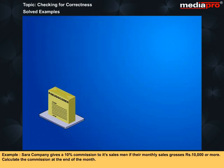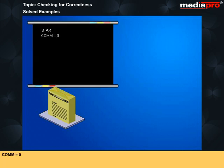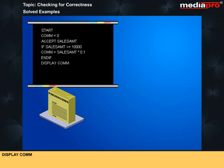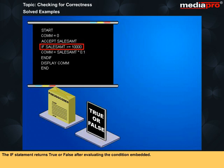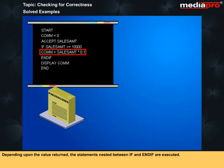For example, Sarah Company gives a 10% commission to its salesman if their monthly sales crosses rupees 10,000 or more. Calculate the commission at the end of the month. Start, Com is equal to 0, Accept sales amount, If sales amount is greater or equal to 10,000, Com is equal to sales amount into 0.1, End if, Display comm, End. Here the statement com is equal to sales amount into 0.1 is executed only after the sales amount value is checked. The if statement returns true or false after evaluating the condition embedded. Depending upon the value returned, the statements nestled between if and end if are executed.